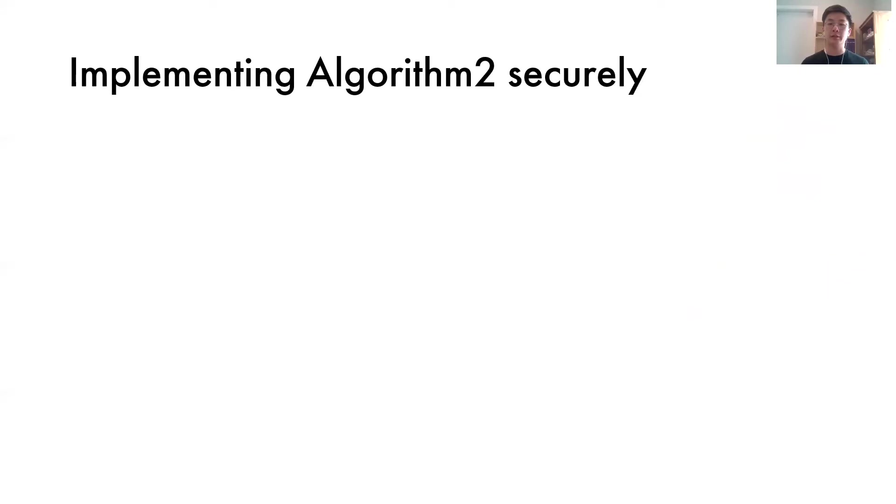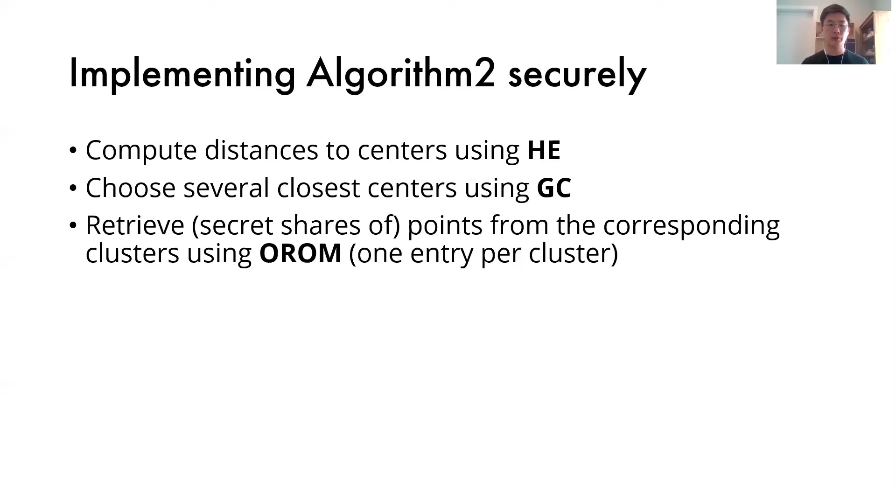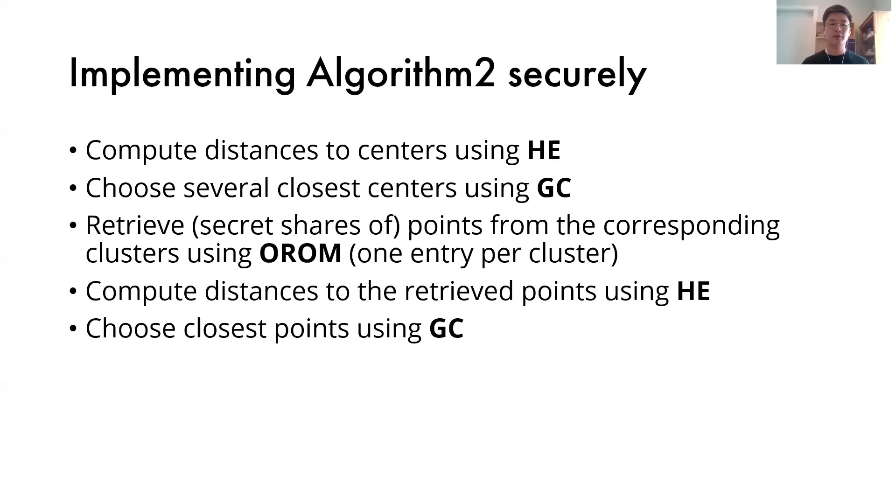Now, to implement algorithm 2 securely, we follow the following workflow. First, we compute the distances to the cluster centers using homomorphic encryption. Then we choose several closest centers using gobble circuit. Next, we retrieve secret shares of points from the corresponding centers using oblivious read-only memory. Then we compute distances to the retrieved points, again using homomorphic encryption. Finally, we will choose the closest points using gobble circuit again.